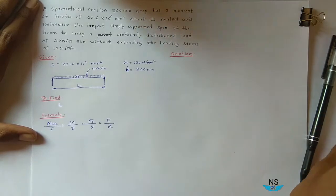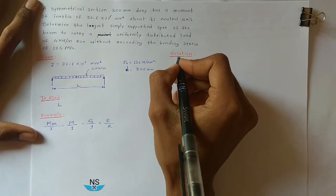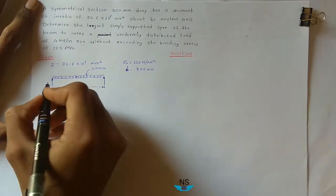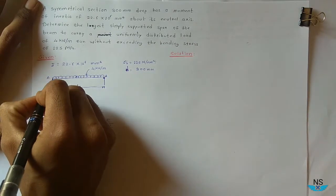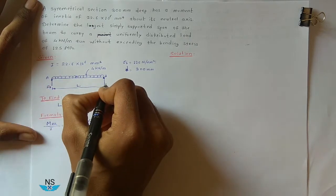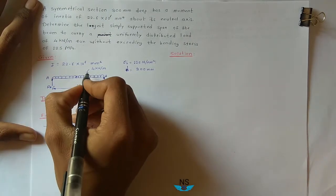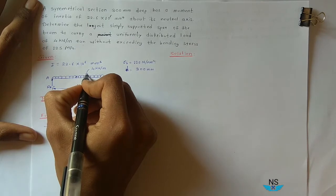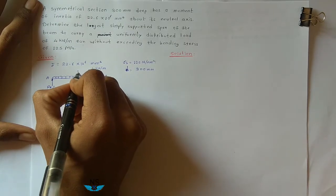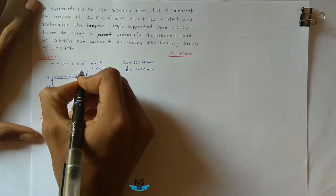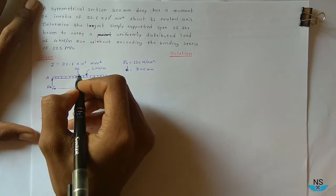Solution: first find Y. For reactions, support A gives R_A and support B gives R_B. The UDL is 4 kN/m over length L, so the total point load equivalent is 4L kN acting at the center of the span.